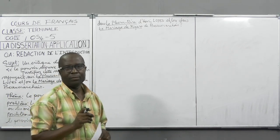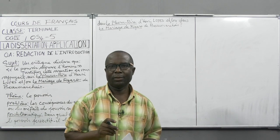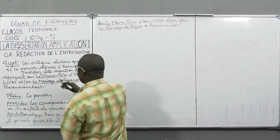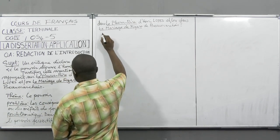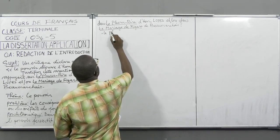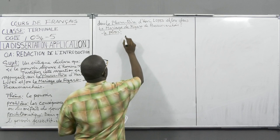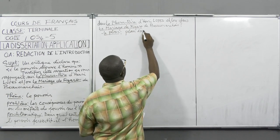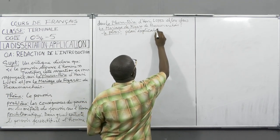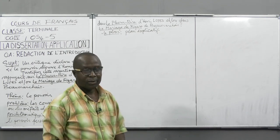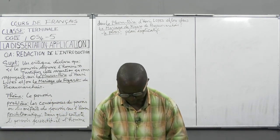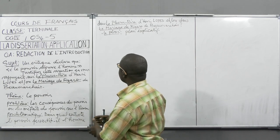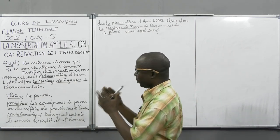S'agissant du plan, parce que cela est aussi important dans l'élaboration de votre introduction, nous avons retenu, par rapport à la consigne du sujet, le plan explicatif. Et ce plan évidemment découle de la consigne du sujet. Voilà les éléments que nous avons relevés la fois dernière dans la compréhension du sujet, et c'est à partir de ces éléments que nous allons rédiger notre introduction.